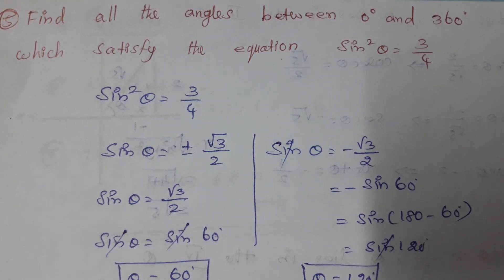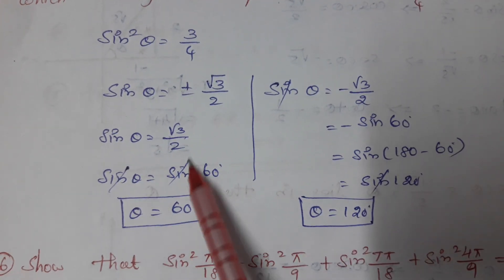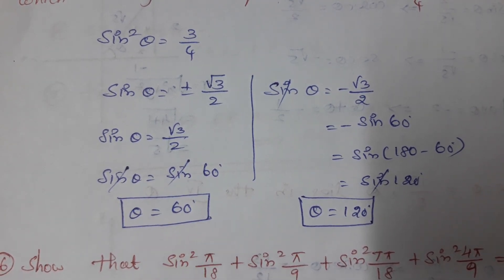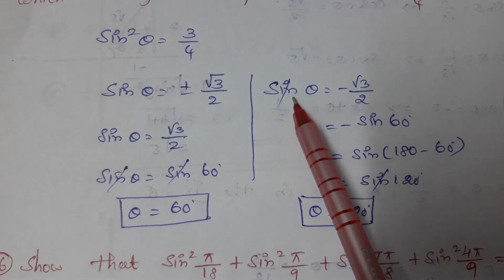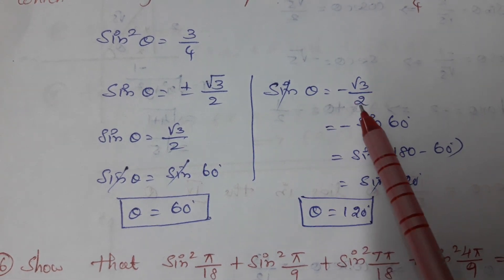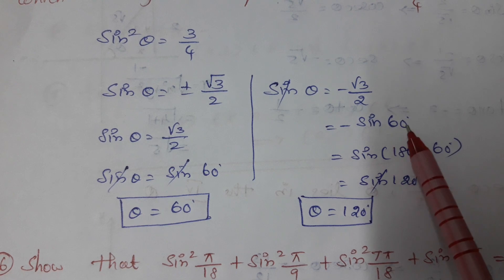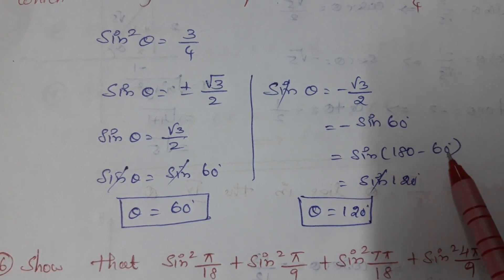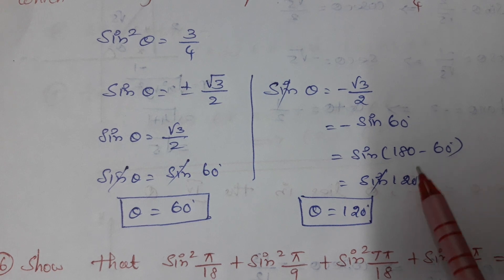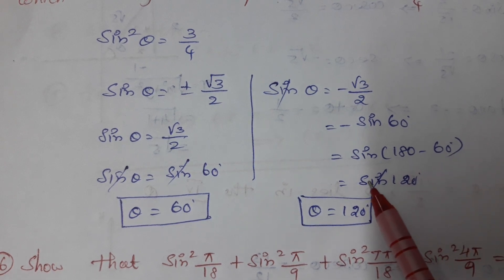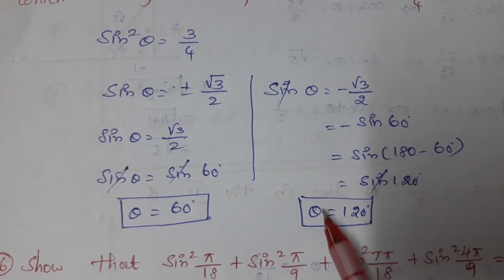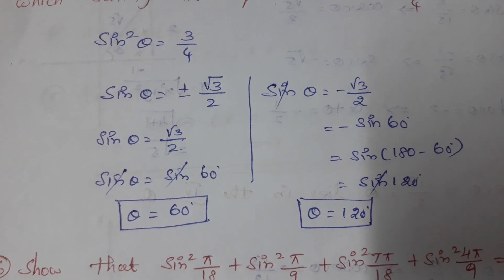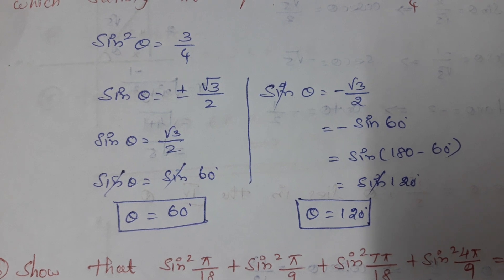First, taking the positive case: sinθ = √3/2. Since sin60° = √3/2, the sines cancel and θ = 60°. Similarly, taking sinθ = −√3/2: sin(−60°) = sin(180°−θ), which is positive, giving sin120°. So θ = 120°.